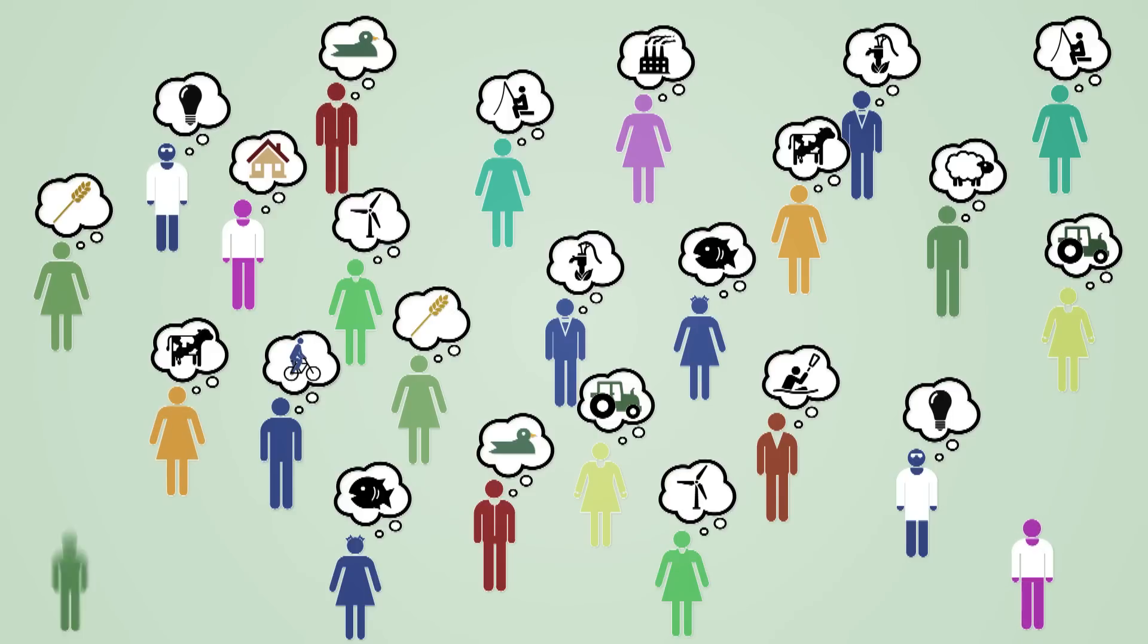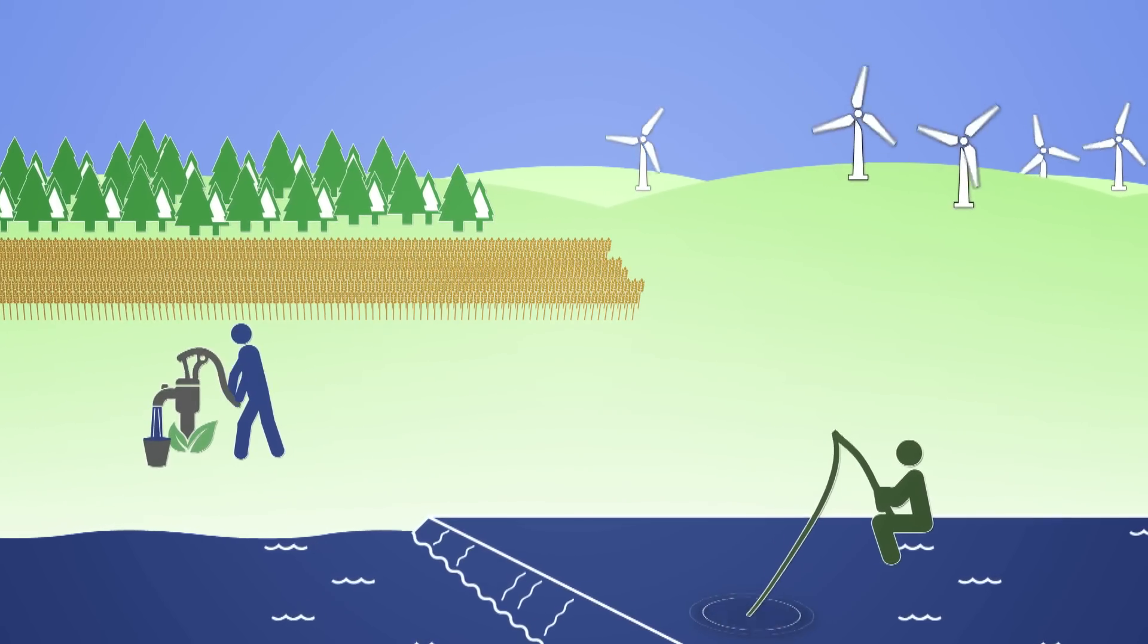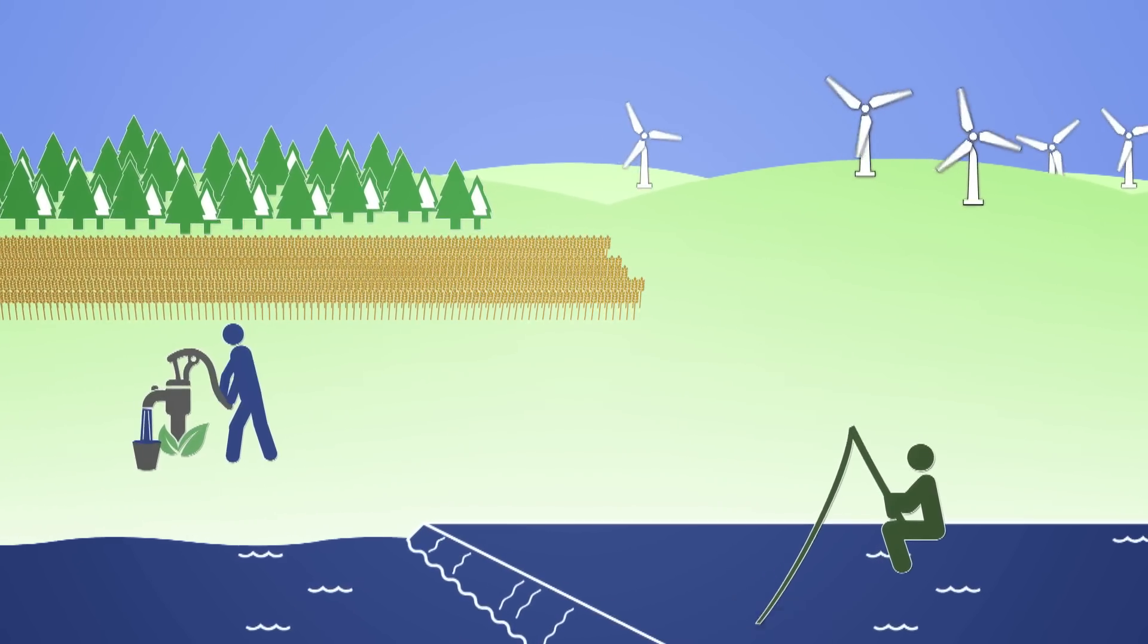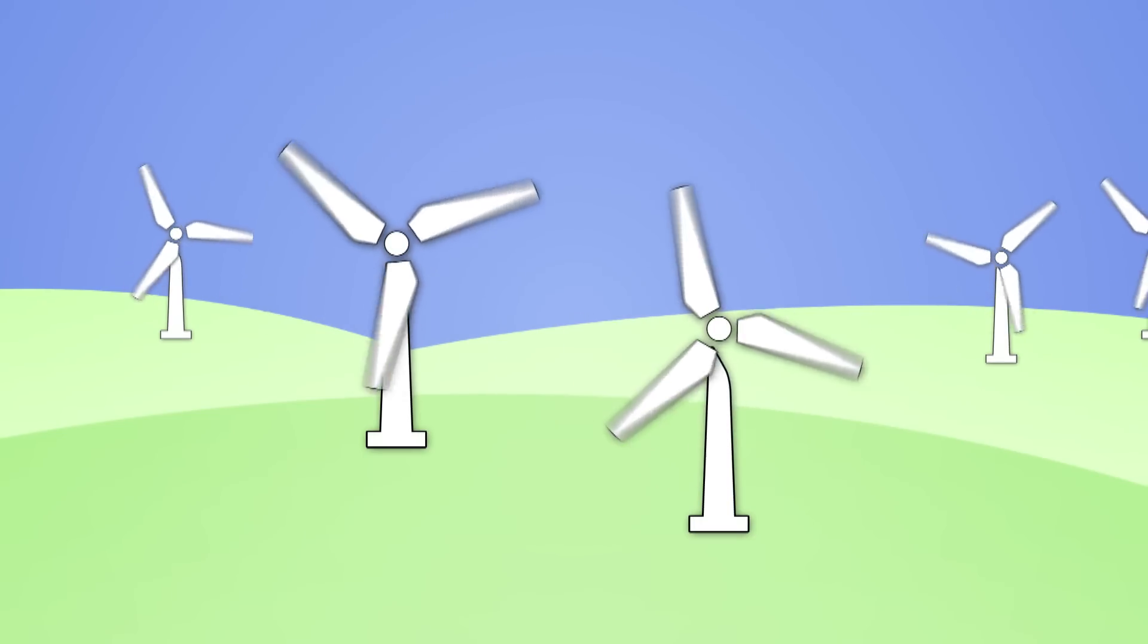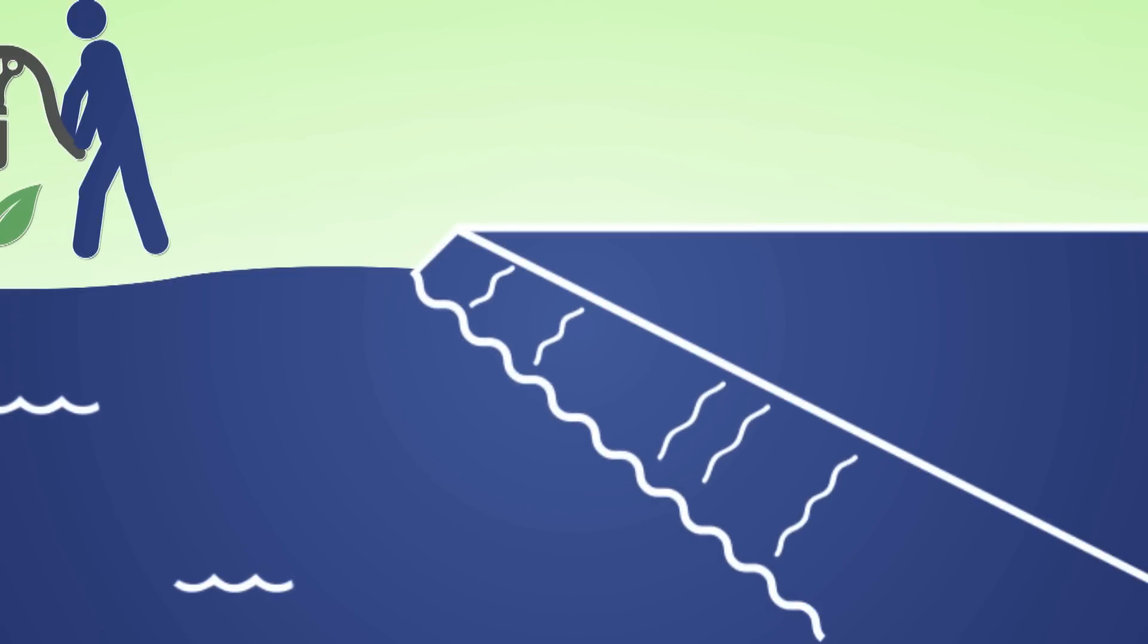So how do we know if we're getting all the things we need? It helps if we look at the benefits the land provides as services, such as food, energy, drinking water, flood protection, or just a place to play.